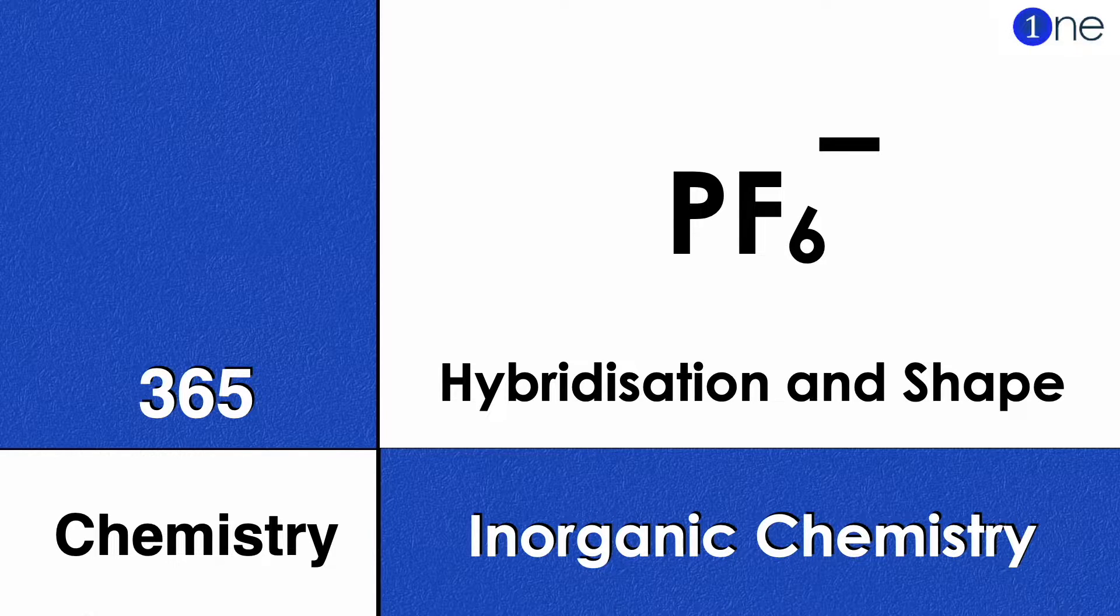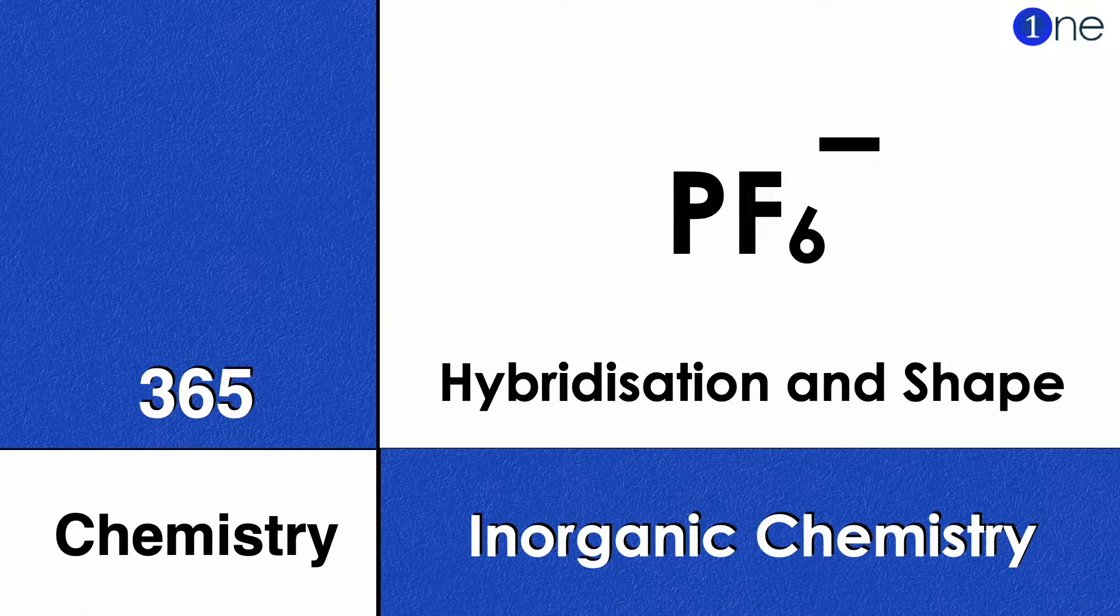Welcome to One Chemistry. This is the 365 Chemistry series, inorganic chemistry questions for you. Here you have PF6 minus, you should find the hybridization and shape of it.